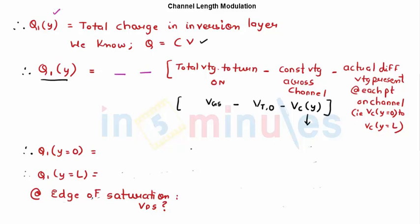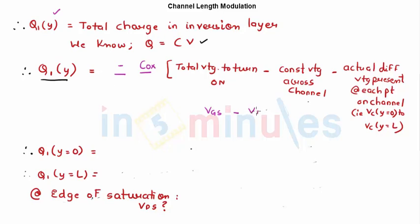The general equation for charge in the channel: since electrons are negative, Q1(Y) = −COX × [VGS − VT0 − VC(Y)]. The term (VGS − VT0) is the voltage required to turn on the transistor, and VC(Y) is the voltage at each node along the channel. This gives the total charge at every point Y.